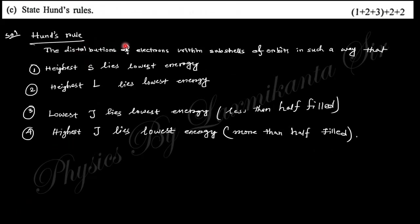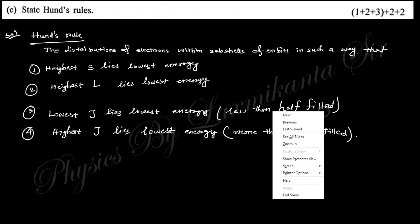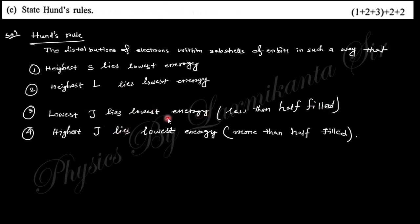Next, state Hund's rule. The distribution of electrons is such that for the lowest energy: S is maximum, L is maximum, and J is minimum for a less than half-filled shell, and J is maximum for a more than half-filled shell. This is Hund's rule.